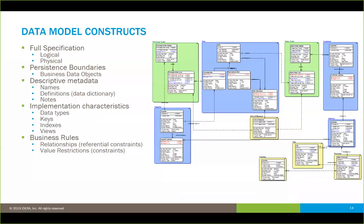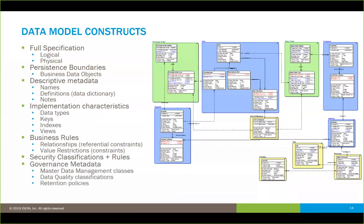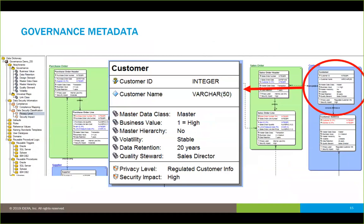All the implementation characteristics — data types, keys, indexes, views — are in the models, along with business rules. Relationships in your data models are statements of business rules that end up as referential constraints in your physical models. Check value restrictions end up as check constraints in implemented databases. Time spent doing it in the model means you generate them from the model rather than hand-building them as a second step. And there's other metadata people often forget: security classifications, data access rules, governance metadata like master data management classifications, data quality classifications, and retention policies for archival and purge — all of those need to work through from a governance metadata perspective.